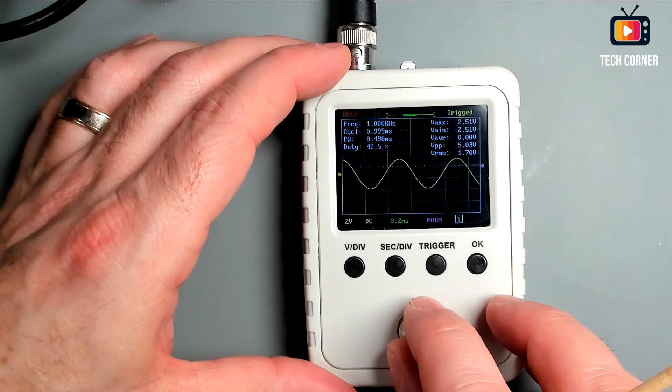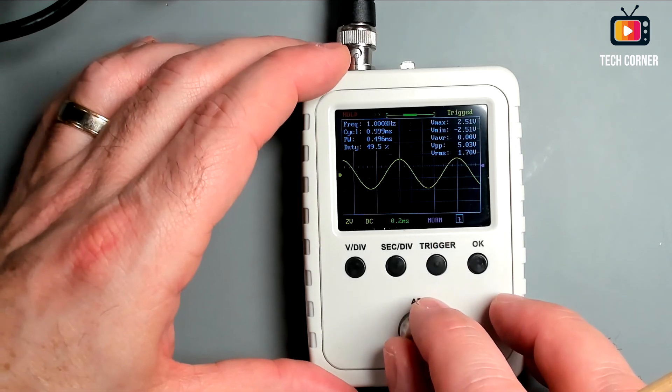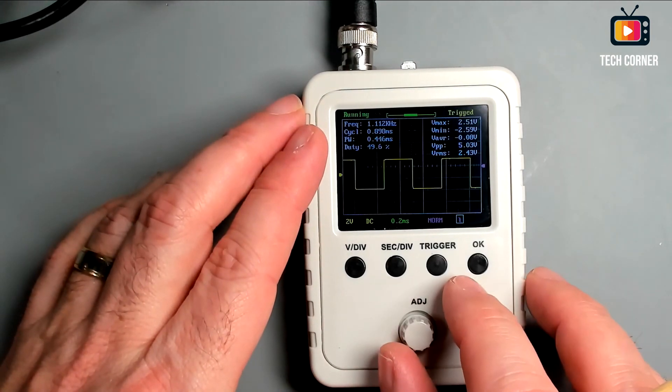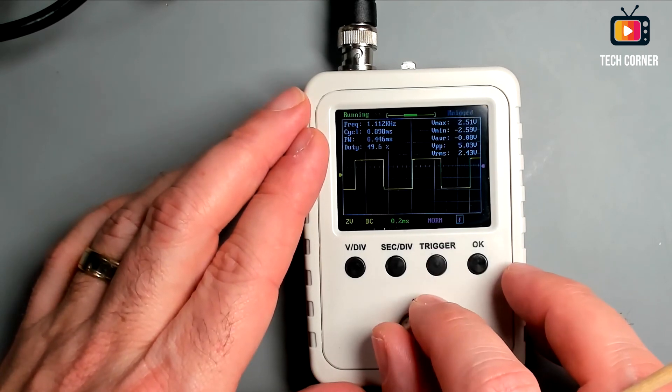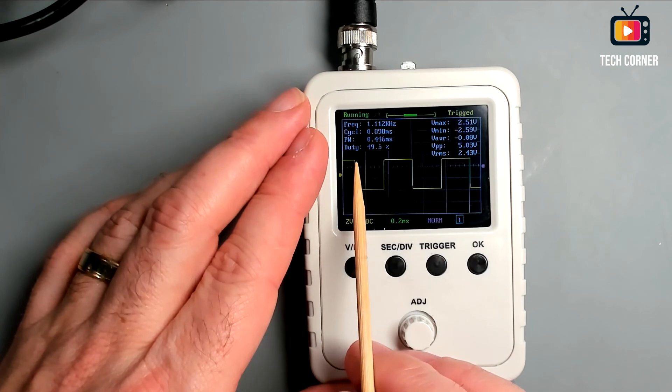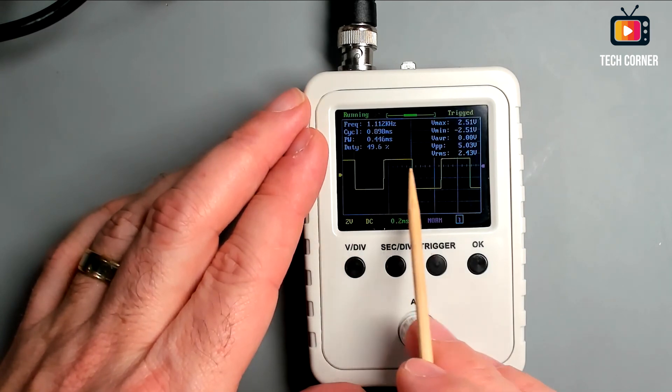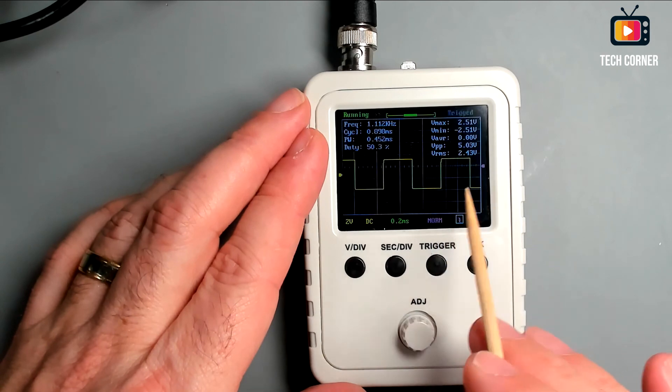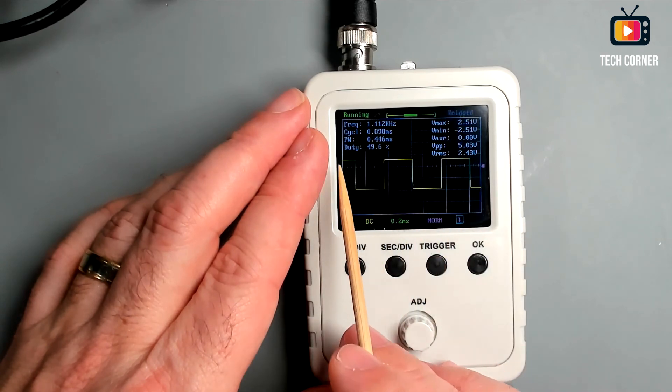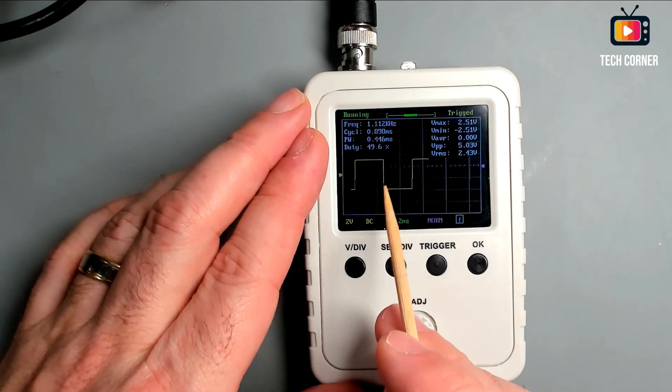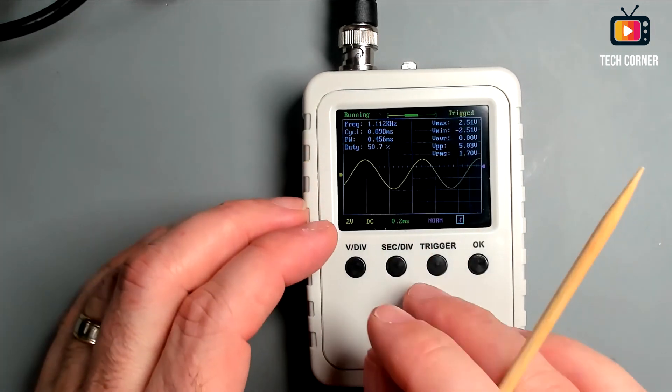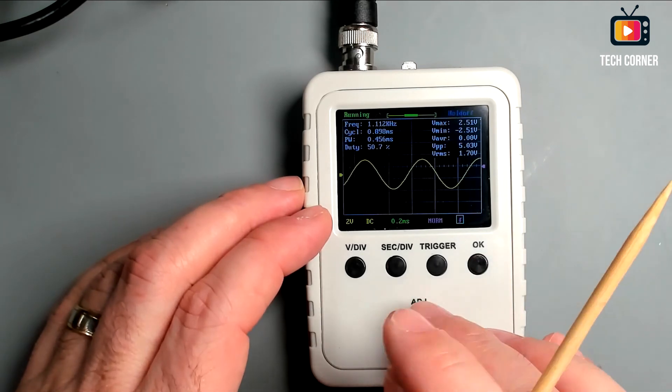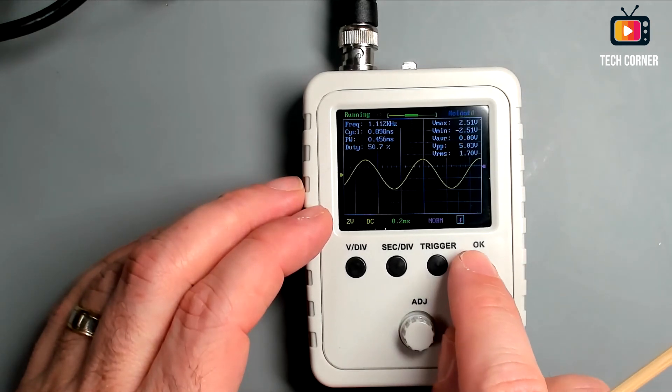Still on trigger, we have this small option that allows us to change the orientation of the line. So right now we have the signal starting at two and a half positive volts. And when we use the adjust knob, we can change the signal to start at two point five negative volts. So it will start off and then on.